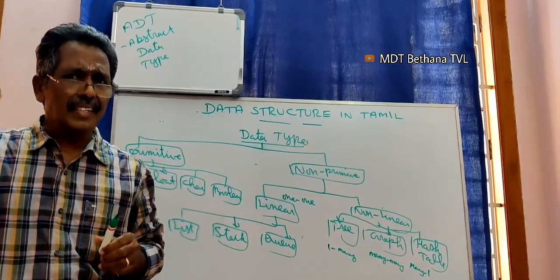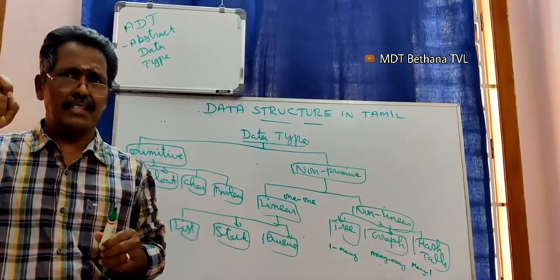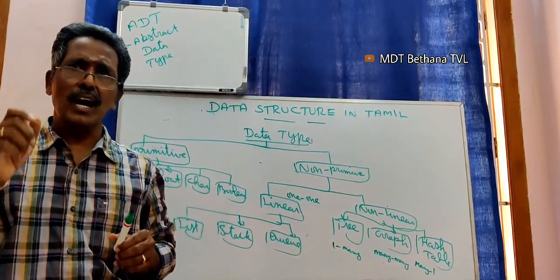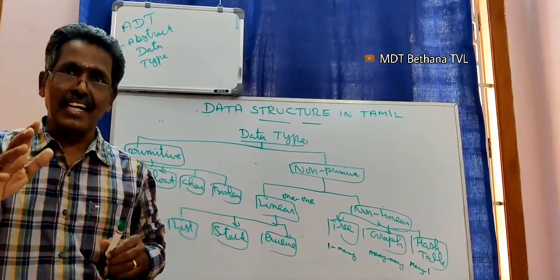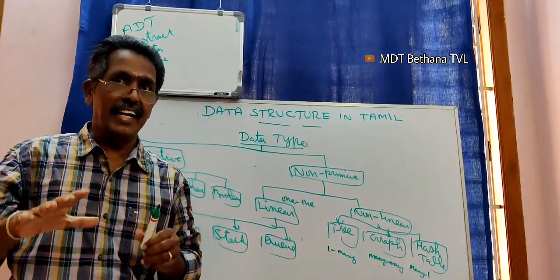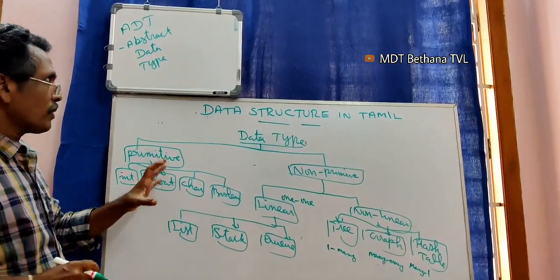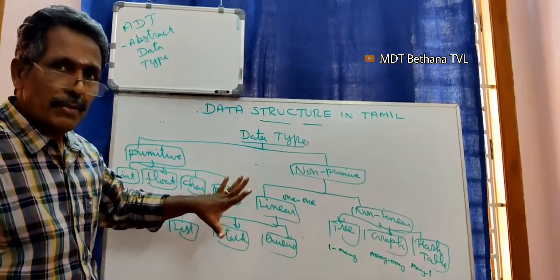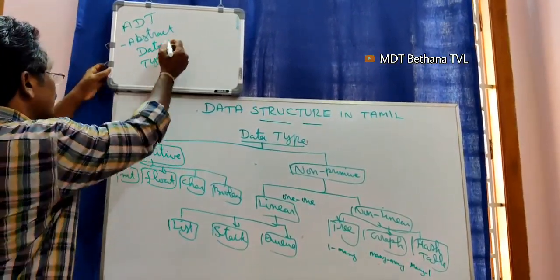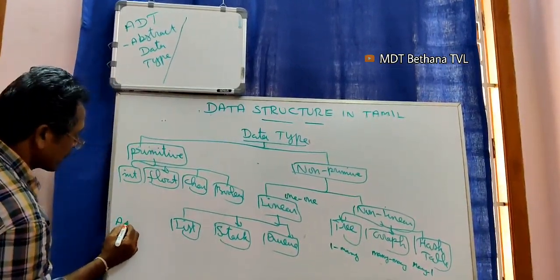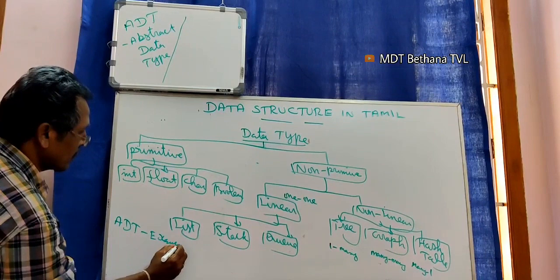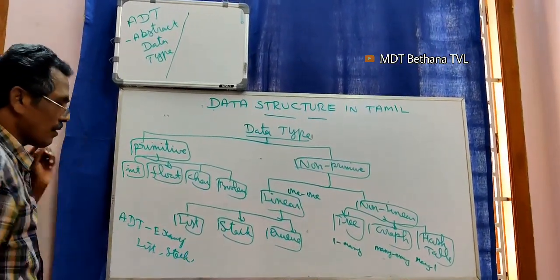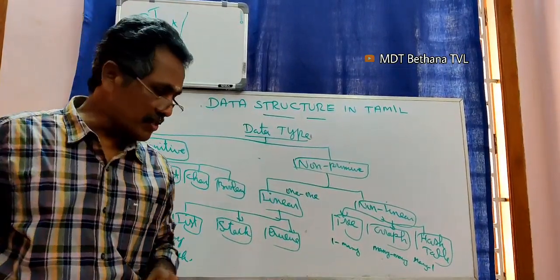How is data stored? When you copy data, there is a track, and the track has a sector. What track and what sector the data is stored in — we do not need to know. This is hiding data — that is abstraction. Examples of abstract data type (ADT) include List, Stack, and Queue.